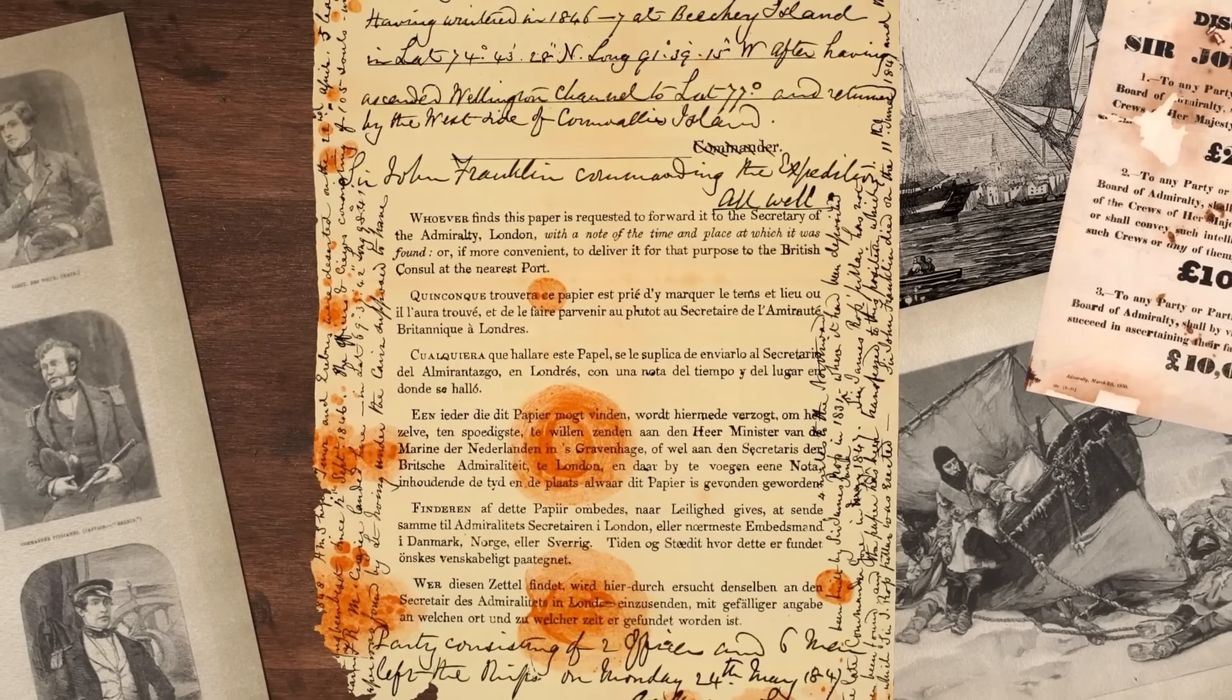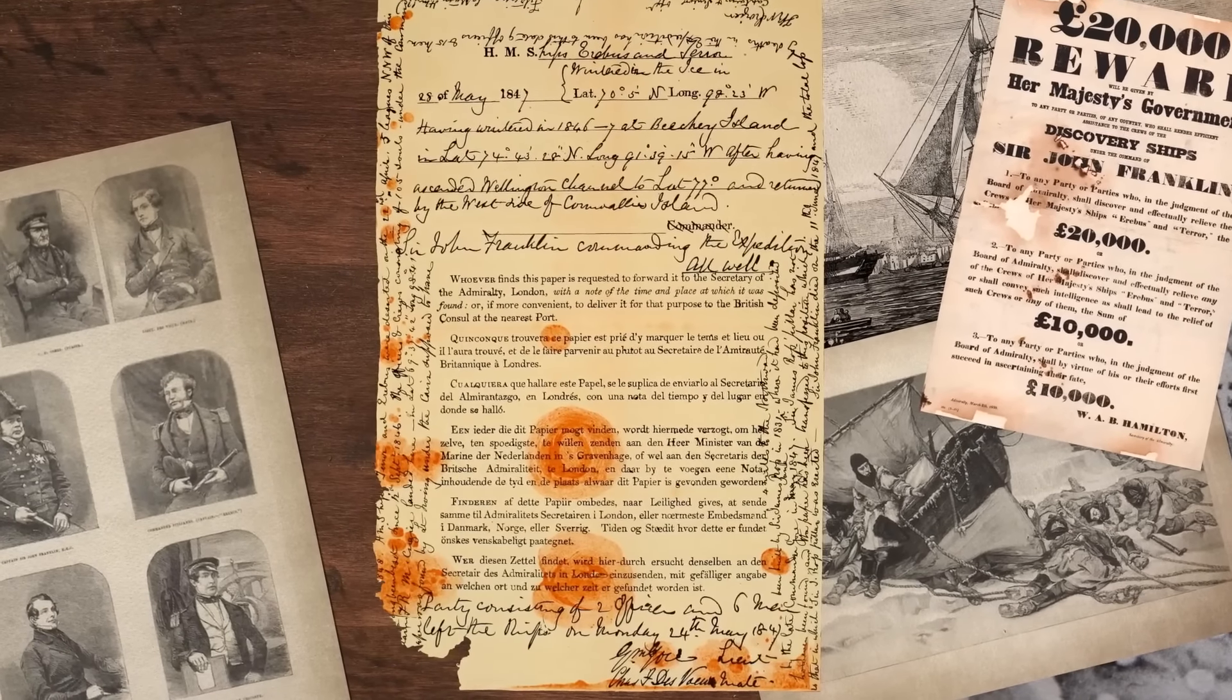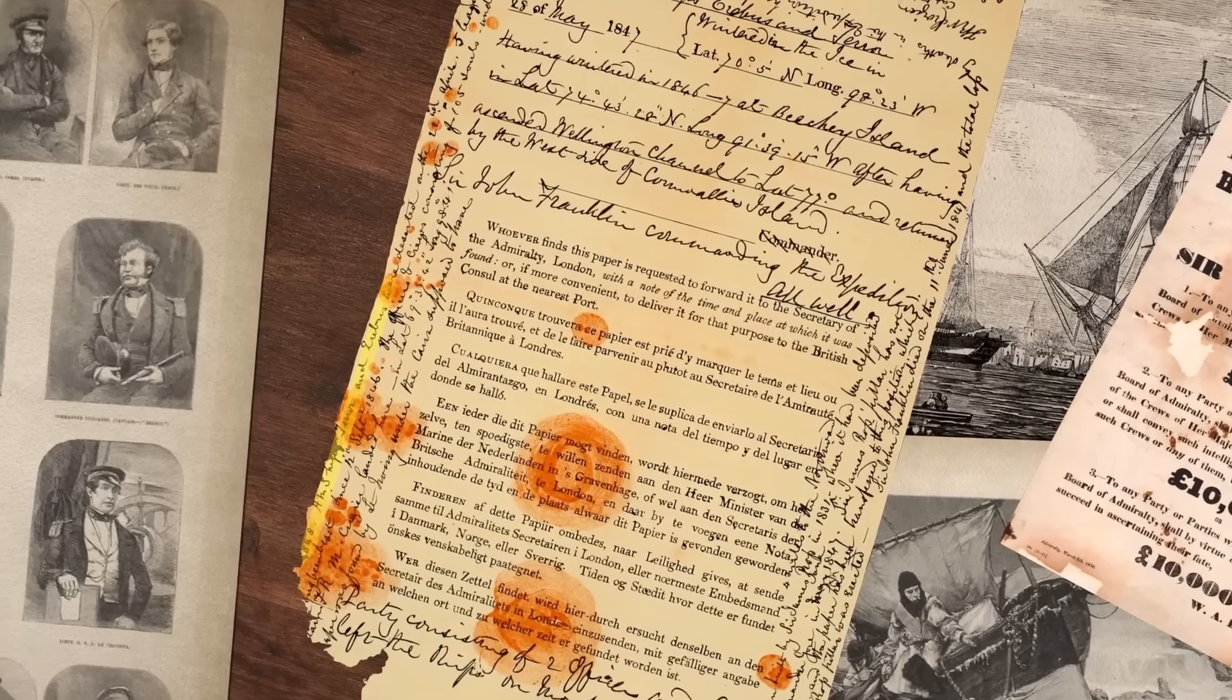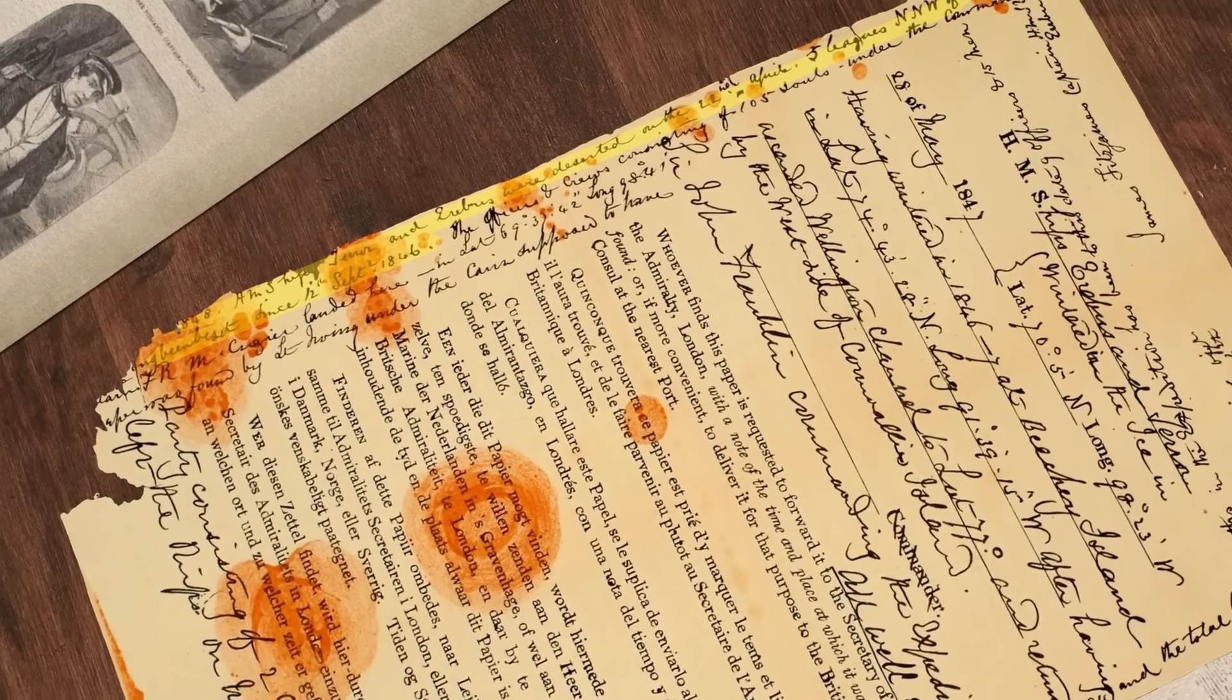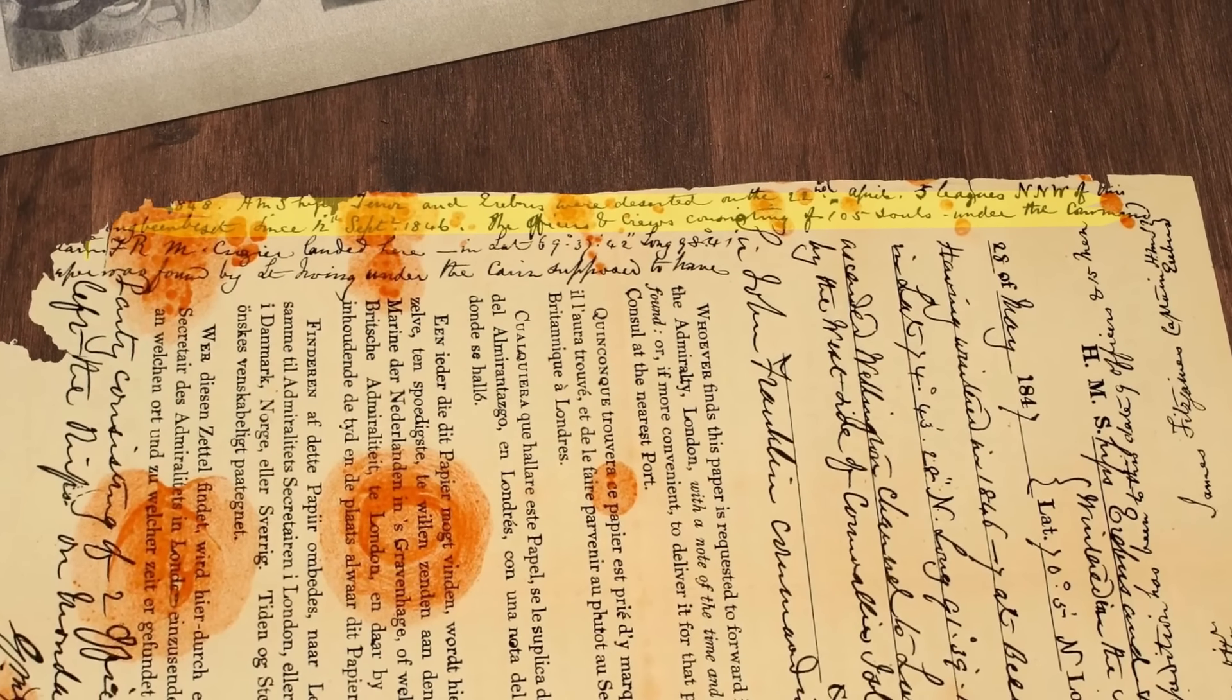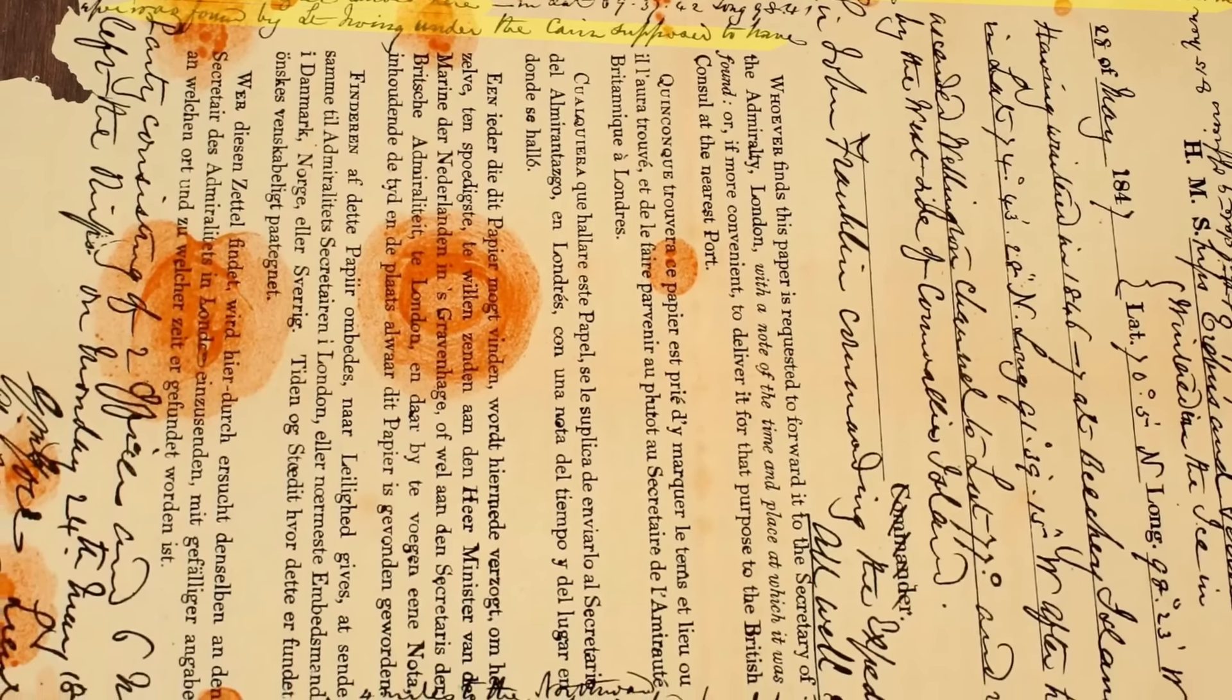The second and final part of the note was written largely on the margins because of a lack of remaining space on the document. It was likely written in April 1848. The 25th of April 1848, HM ships Terror and Erebus were deserted on the 22nd of April, five leagues NNW of this having been beset since the 12th of September 1846. The officers and crews, consisting of 105 souls under the command of Captain FRM Crozier, landed here.